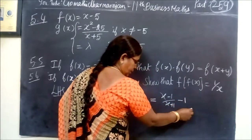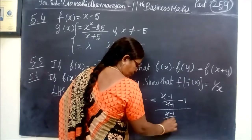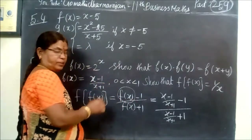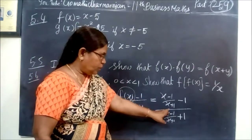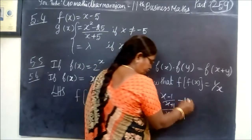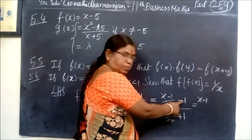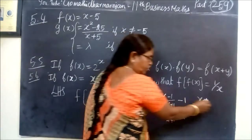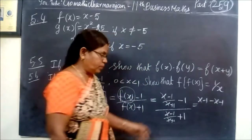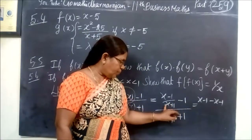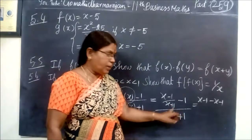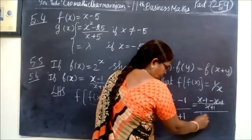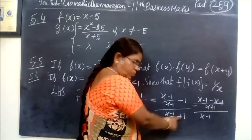Let y equal to x minus 1 by x plus 1. The value of x equals f(x). Now consider the next step. We cross-multiply: y minus 1 is equal to x minus 1.